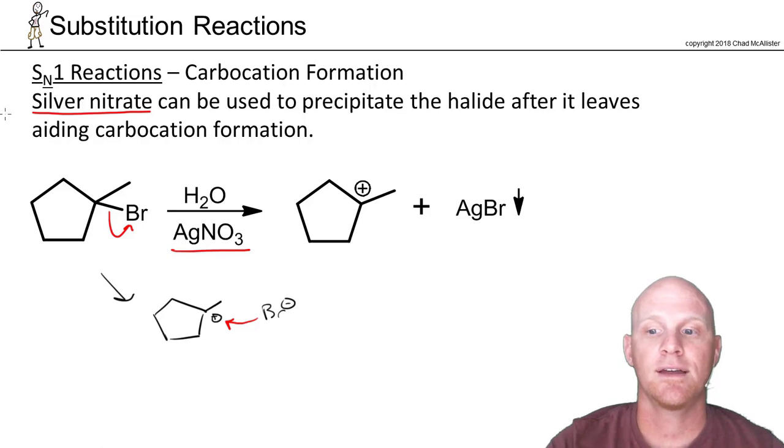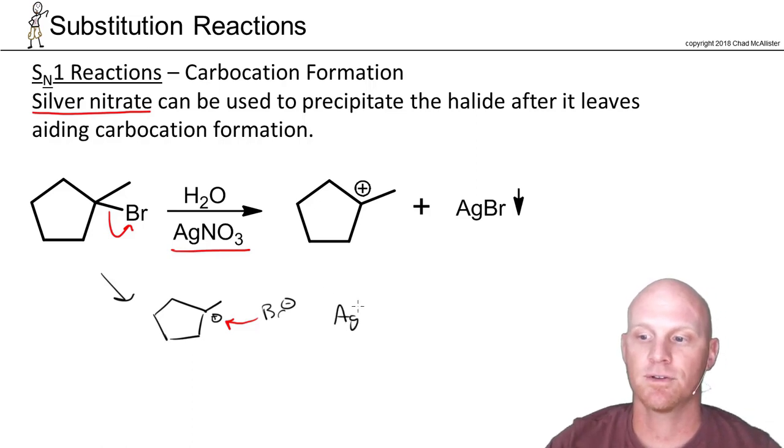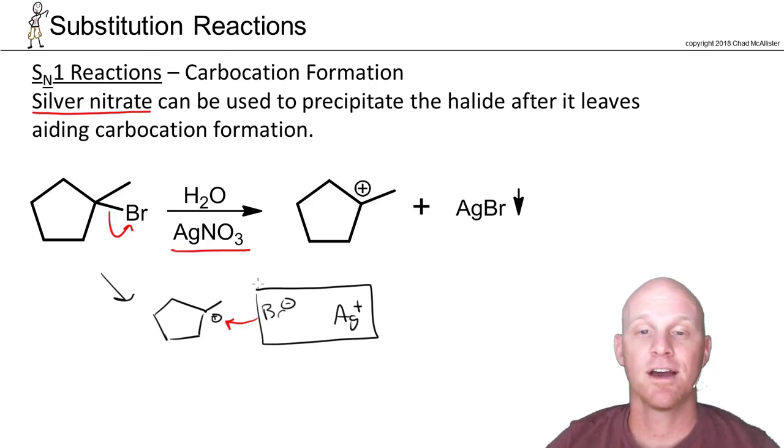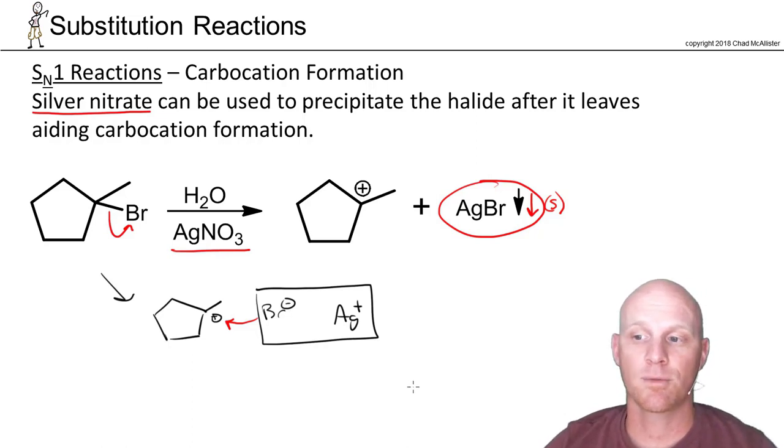If we add silver ions into the solution, it turns out silver and all the halides AgCl, AgBr, AgI, they're all very insoluble. We're going to form AgBr, a very insoluble precipitate. This down arrow refers to the fact that it's a solid precipitate that falls out of the solution. This prevents bromine from reattaching to the carbocation and greatly enhances carbocation formation. If you see silver nitrate, there's a good chance you're trying to form a carbocation. Good indicator you might be doing an SN1 reaction.